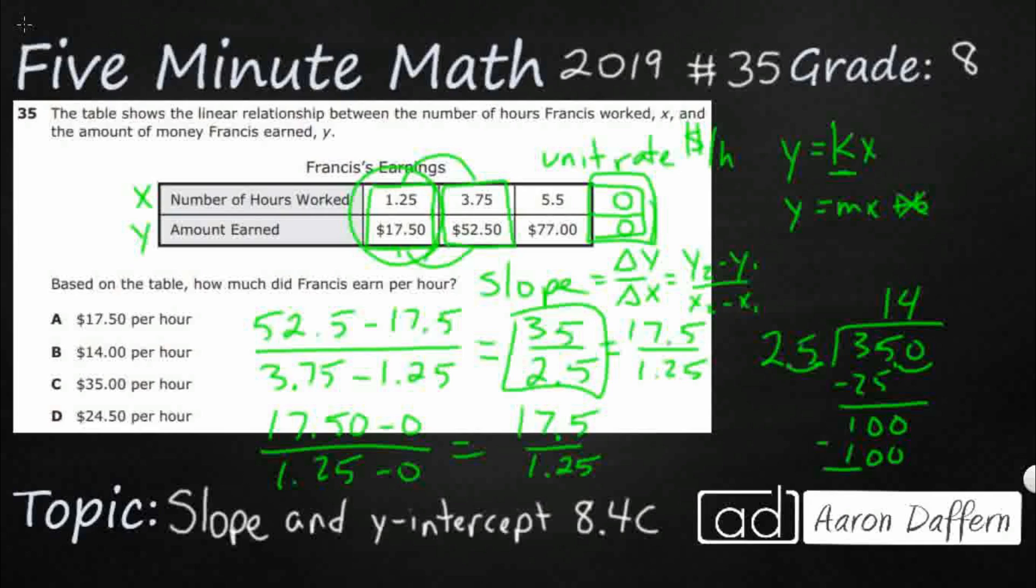Pretty simple once you know what you're looking for there. If we would have divided 125 into 17.5, we would have gotten the same answer. Obviously, we have this trick right here. Look at that $17.50 staring at us right there. But that is not what we want. Our answer here is going to be B. Thank you.